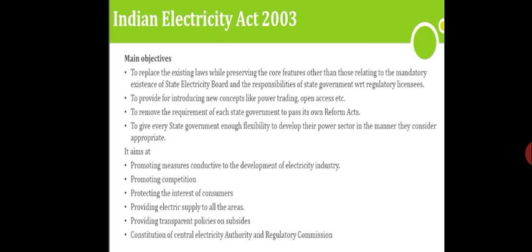The main objective of the Indian Electricity Act is to replace the existing laws while preserving the core features, other than those relating to the mandatory existence of state electricity boards. Whatever rules and regulations were formed earlier, we have to preserve them, and if any changes are needed they can be made while preserving the early rules.